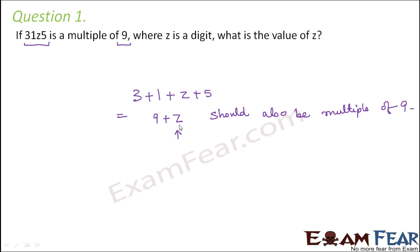Now, what is that value of z which when put here will make 9 plus z a multiple of 9? So if z is equal to 0, in that case this value would be 9 plus 0, so 9 is a multiple of 9. So z equals 0 is a possible value.